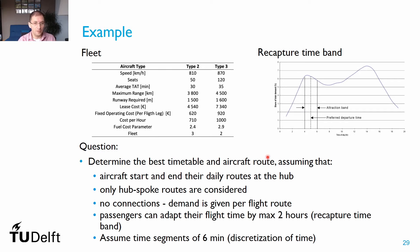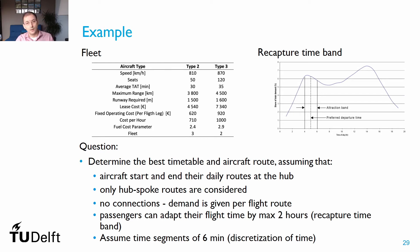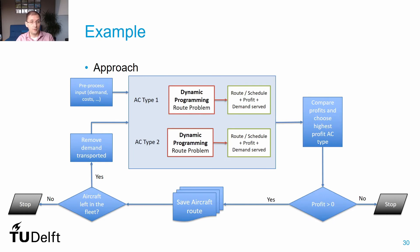Demand beyond the 2-hour attraction band is not considered for a given flight. We also need to discretize our day to apply dynamic programming, dividing the 24 hours into time segments of 6 minutes — that is, 10 segments per hour. The proposed approach is described in a flow chart, starting by pre-processing all inputs: demand, cost, and fleet characteristics.